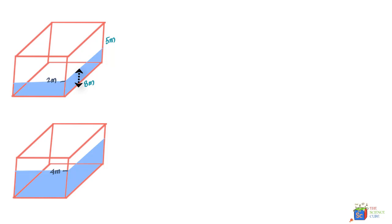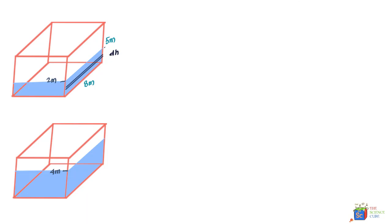Consider a small strip of water on the wall at a distance h from the top, with thickness dH. We know that pressure at a certain depth is given by p = ρgh, so the pressure at this level is p = ρgh. The force contribution from this strip is dF equal to the pressure at that level.